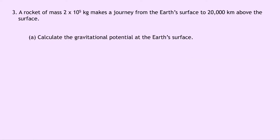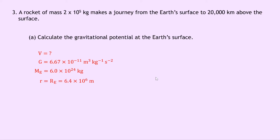Lastly, Question 3 says that a rocket of mass 2 times 10 to the 5 kilograms makes a journey from the Earth's surface to 20,000 kilometers above the surface. Part A says to calculate the gravitational potential at the Earth's surface. Writing down what we know, we're trying to find V. G is 6.67 times 10 to the minus 11 meters cubed per kilogram per second squared. The mass of the Earth is 6.0 times 10 to the 24 kilograms. The distance R equals the radius of the Earth, 6.4 times 10 to the 6 meters, since we're at the surface.